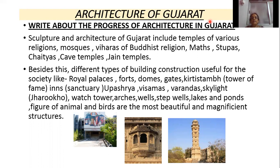During the medieval period in Gujarat, many temples of different religions were built. Mosque is the worshipping place of Muslims. Viharas are the resting places of Buddhist religion. Mats are the living places of saints. Stupas are Buddhist temples, oval in shape, under which remains of Lord Buddha's body — such as teeth, nails, hair, bones, and ashes — were kept in a box. Chaityas are big holiness stupas. Cave temples and Jain temples were also built in the medieval period.